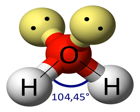A higher bond order constitutes greater repulsion. This explains why in phosgene, the oxygen–chlorine bond angle is larger than the chlorine–chlorine bond angle, even though chlorine is more electropositive than oxygen. In the carbonate ion, all three bond angles are equivalent due to resonance.